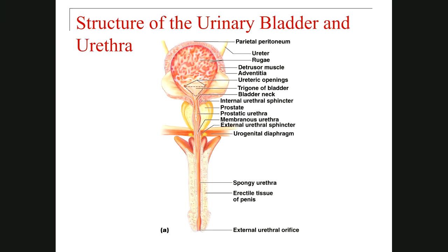This is the male urethra. You can see the male urethra with two ureters, the urinary bladder with many rugae, the detrusor muscle in the wall, and the trigone with three corners — two for the ureter openings and one for the urethra opening. Here you can see the internal urethral orifice and the internal urethral sphincter, which is involuntary.